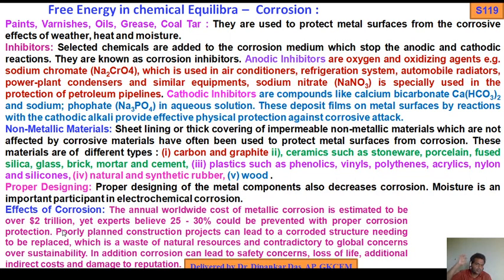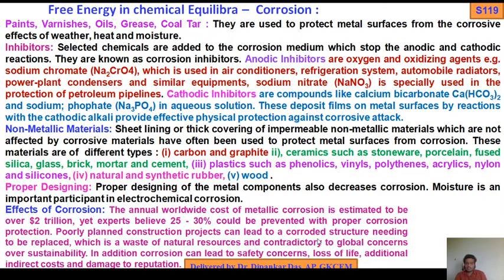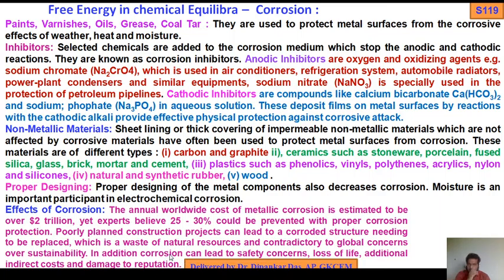Effect of corrosion — impact of corrosion: the annual worldwide cost of metallic corrosion is estimated to be over $2 trillion. Yet experts believe 25–30% can be prevented with proper corrosion protection. Poorly planned construction projects can lead to corroded structures needing to be replaced, which is a waste of natural resources and contradictory to global concerns over sustainability. In addition, corrosion can lead to safety concerns, loss of life, and additional indirect costs.